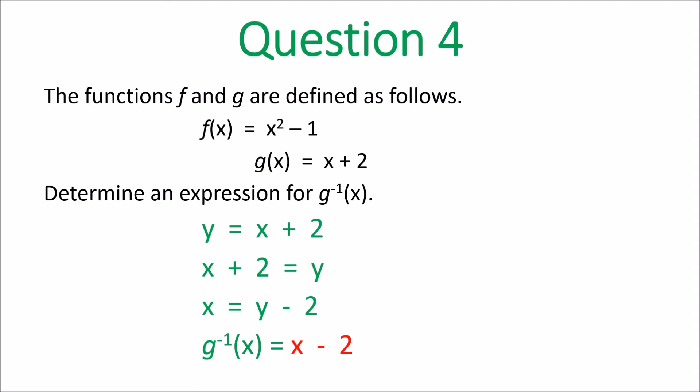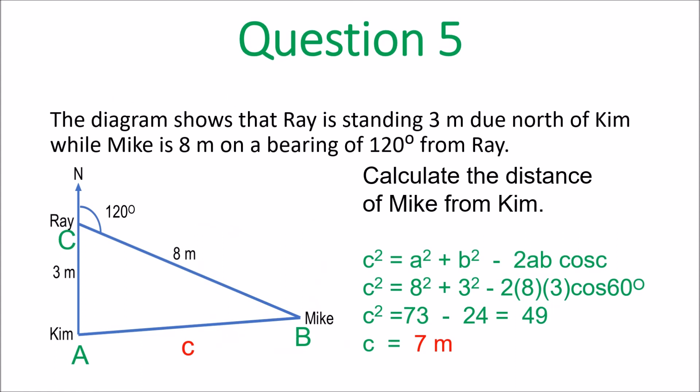Question 4: determine an expression for the inverse of g of x. Go to g of x and replace g of x with y, giving y equals x plus 2. Solve for x: x equals y minus 2. Then swap y for x, so the inverse of g of x equals x minus 2. That's the expression you need.